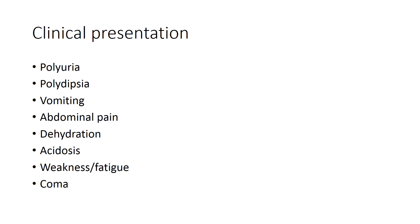We can now understand why patients with diabetic ketoacidosis present with polyuria, polydipsia, vomiting due to ketones, and abdominal pain — some may even be mistaken for acute abdomen. They will be dehydrated, have acidosis, weakness, fatigue, and may even be in coma.